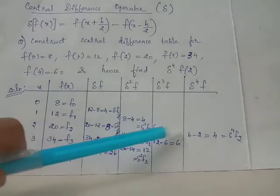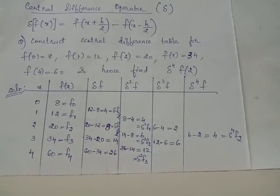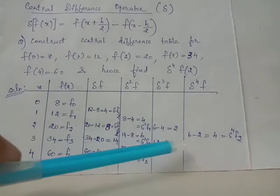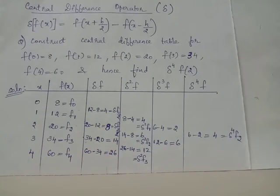Here we can use the notation delta cube f3 by 2 and here delta cube f5 by 2. The last column will be delta raise to 4 f, the fourth central difference, which is 6 minus 2 which equals 4. This is the value corresponding to input value x equals 2, notated as delta raise to 4 of f of 2 or delta raise to 4 f suffix 2.